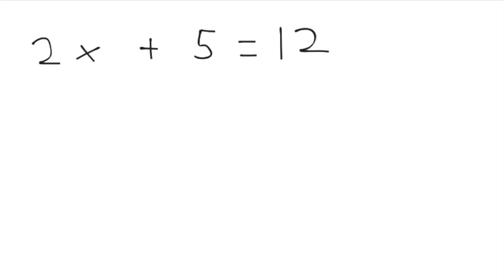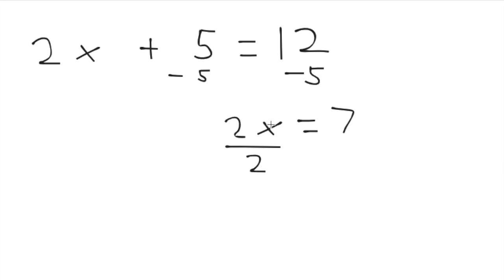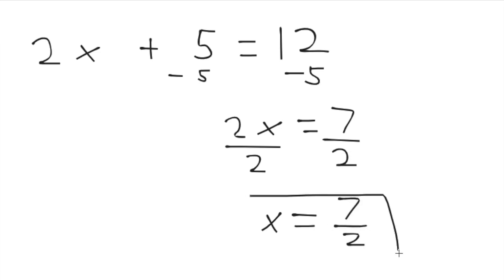We skip to the fourth rule: isolate the terms with the variable. All we do is subtract 5 from both sides and we get 2x equals 7. Now the fifth rule is isolate the variable alone, so divide by 2 on both sides, and we get x equals 7 over 2. The variable is by itself — that's what the fifth rule is about.